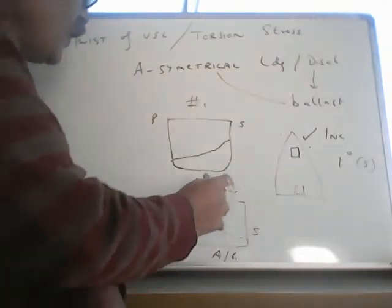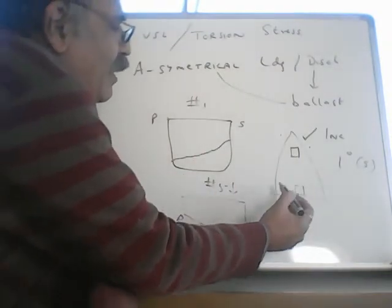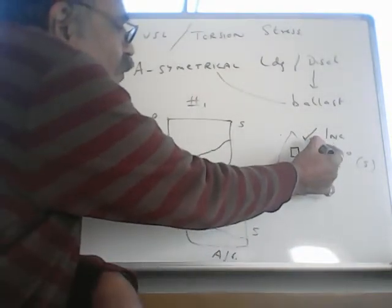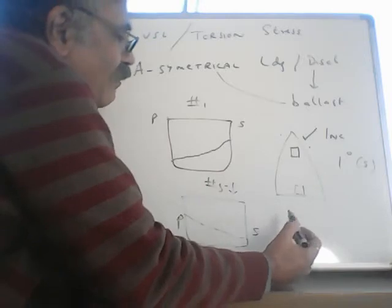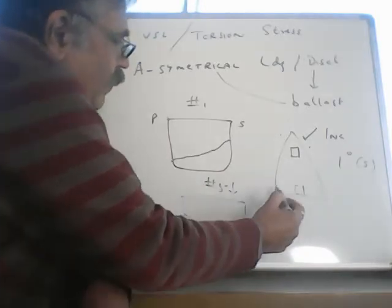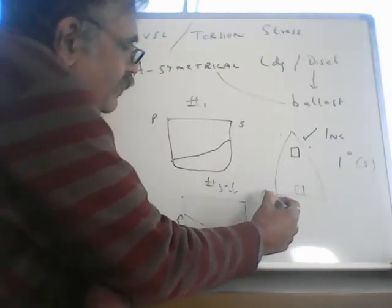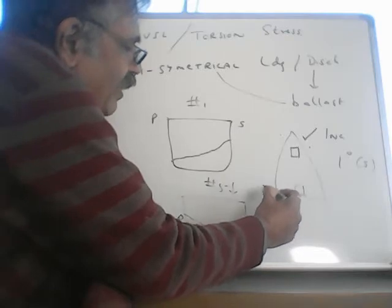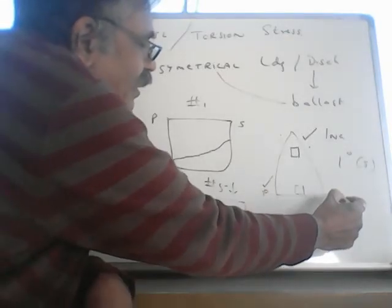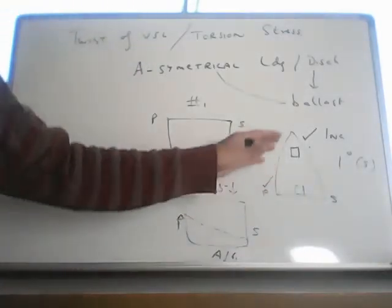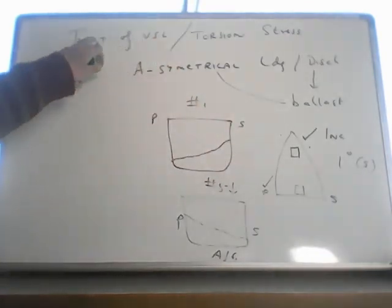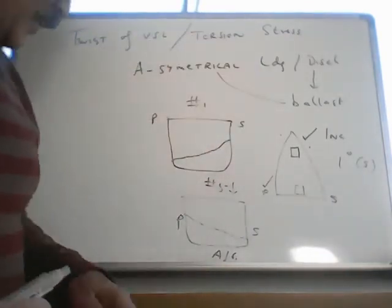List will be corrected, but due to this asymmetrical loading, starboard forward draft is more than port forward draft. And in the aft, the port side aft draft is more than the starboard side aft draft. So vessel gets twisted. This is called torsional stress.